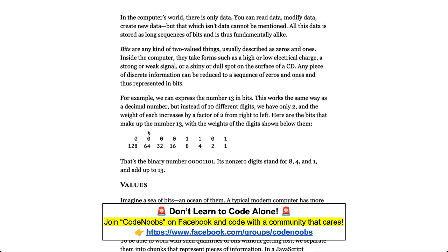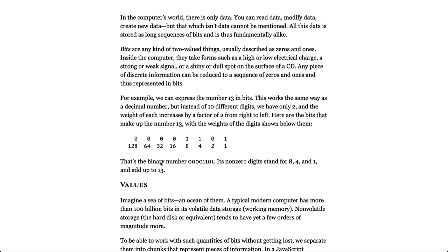Here are the bits that make up the number 13, with the weights of the digits shown below them. That's the binary number 00001101. Its non-zero digits stand for 8, 4, and 1, and add up to 13.